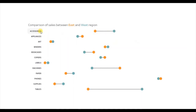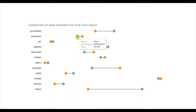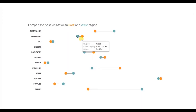In the accessories subcategory, the sales done in the east region was 45,000 and the sales in the west region was 61,000. For appliances, the sales in the west region was 30,000 and the sales in the east region was more than the west — 34,000. Smaller the line, smaller will be the difference in sales between the two regions, and larger the line, more will be the difference.